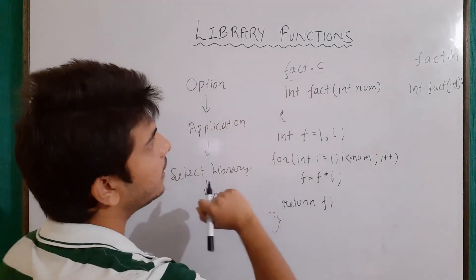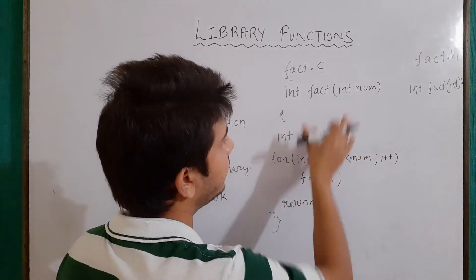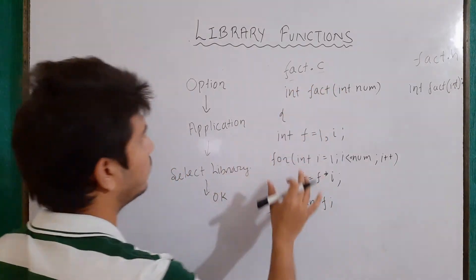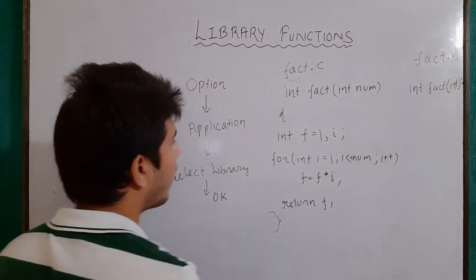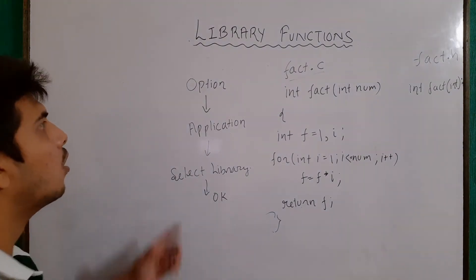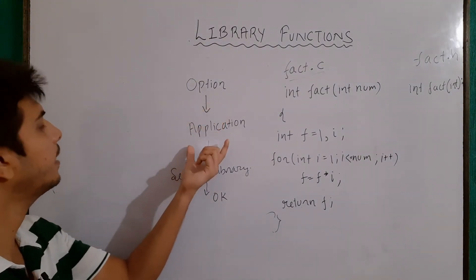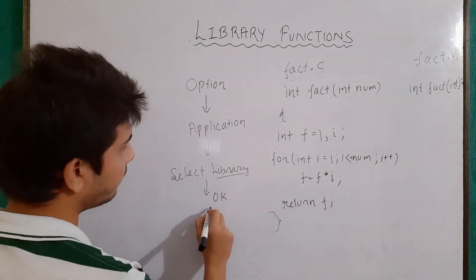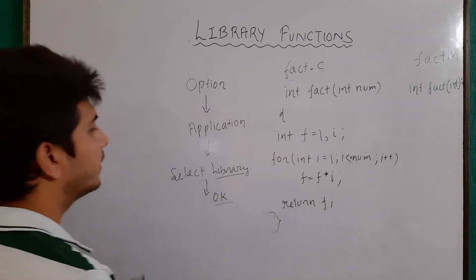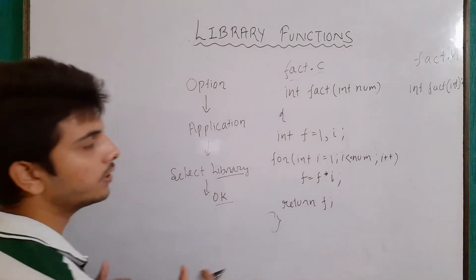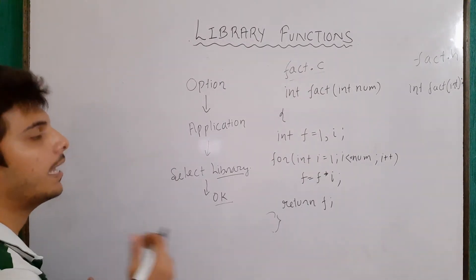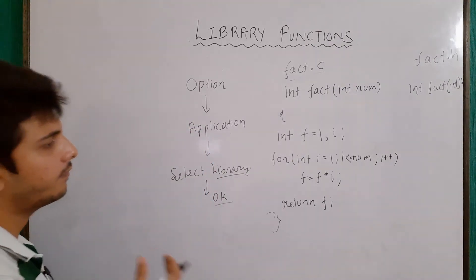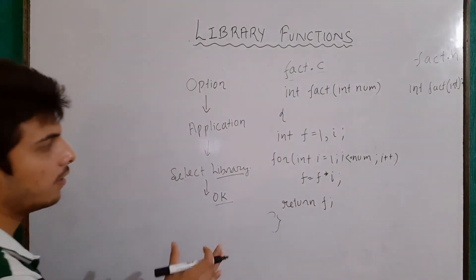So we create fact.c and inside it write the definitions of all the functions, noting that there is no main function here. After that, in Turbo C we go to the Options menu. Inside Options, there will be an Application option; we click on it, select Library, and then click OK. That means after compilation, the file created will have the extension .lib — a library file will be created. Note that this is specific to the Turbo C and C++ compiler; different compilers use different functionality for this.